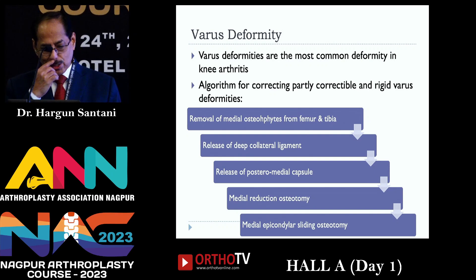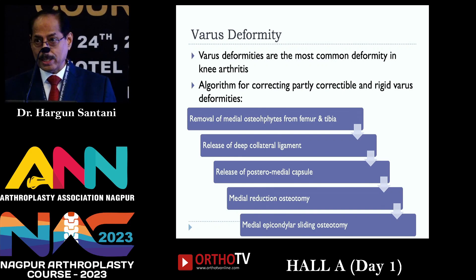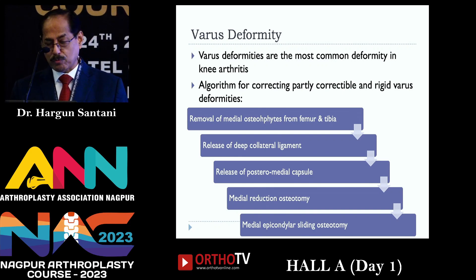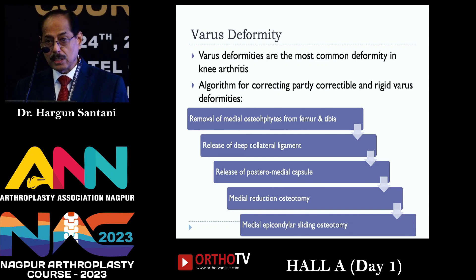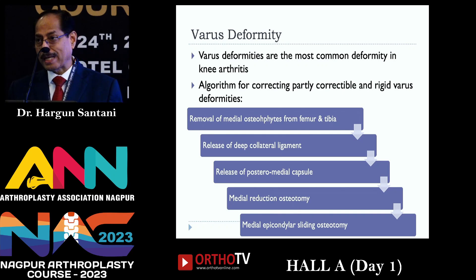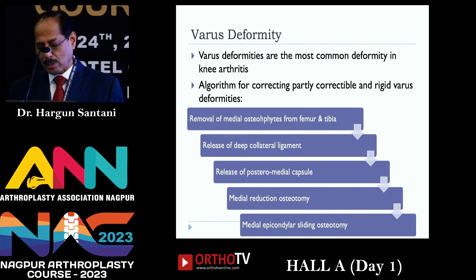We will deal with varus deformity. These are the most common deformities we come across, and this is the algorithm — you do not have to do all the steps; you do one step and if it is enough to correct the deformity, you stop there. If not, you proceed to the next step. First, remove the medial osteophytes from tibia and femur, then release of the collateral is almost by default. If still unable to correct varus, release the posterior medial capsule — it is the posterior medial capsule that is contracted, not the superficial collateral. If still not enough, do medial reduction osteotomy, and lastly medial epicondylar osteotomy, which is required very rarely, especially for extra-articular deformities.